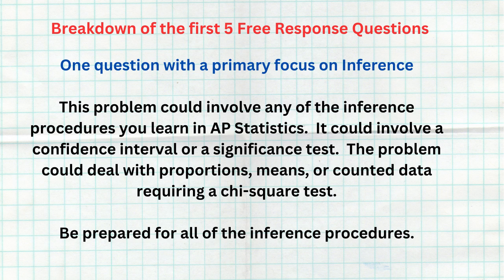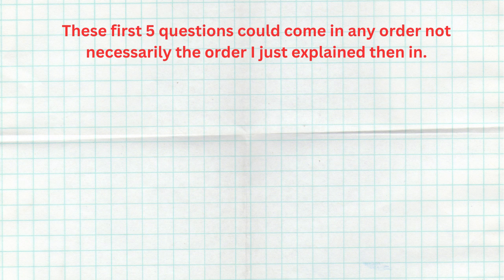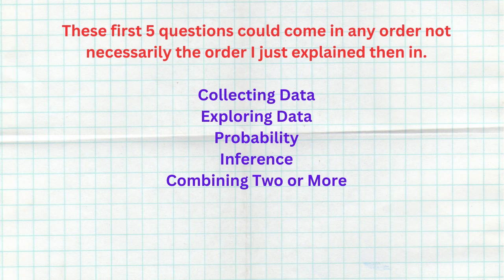A fourth free response question is going to primarily focus on inference — you'll be asked to do a confidence interval or a significance test for proportions, means, or maybe chi-squared. The fifth question deals with two or more skill categories together, like collecting data with inference, or exploring data with inference. Now, those five question types might not come in that exact order, so the order doesn't matter — just know there will be five questions: one on collecting data, one on exploring data, one on probability and sampling distributions, one on inference, and one combining two or more categories.